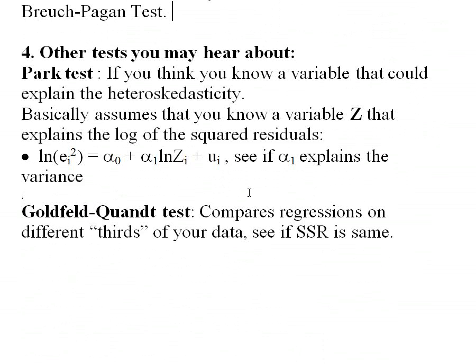Two other common tests you'll sometimes see are the Park test. The Park test says: suppose you think you know some variable that's related, for some theoretical reason, to the residuals. Then you run a similar kind of regression to the Breusch-Pagan and White tests — you take the natural log of the squared residuals as your dependent variable and run a regression on the natural log of z, where z is a variable that you think, for some theoretical reason, might be related to the variance in the residuals.